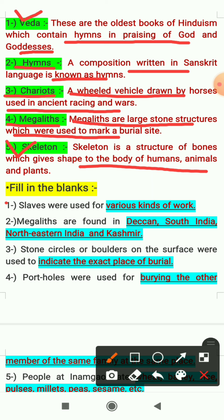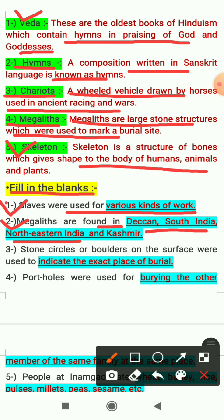Next exercise is fill in the blanks. The first one: slaves were used for various kinds of work, because slaves do the work which the owner does not do. The second one: megaliths are found in Deccan, South India, Northeastern India and Kashmir.